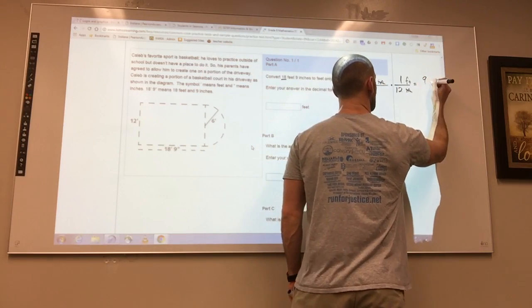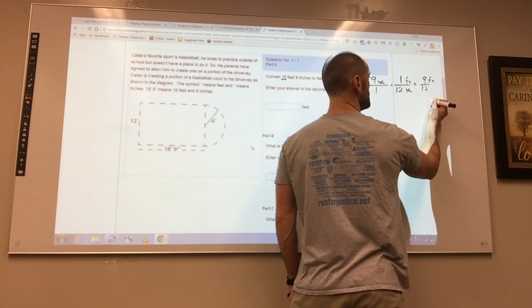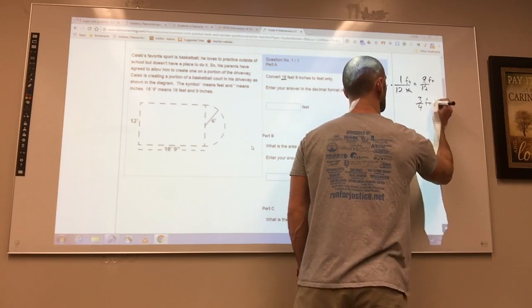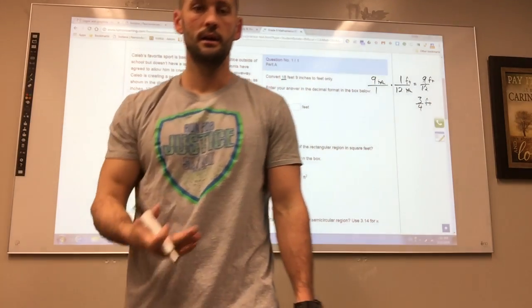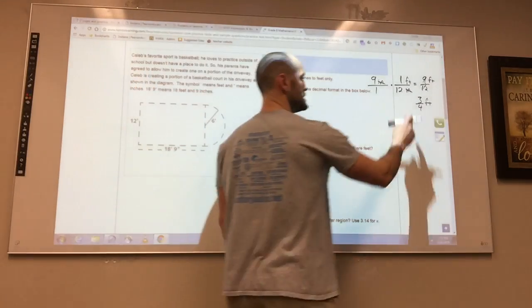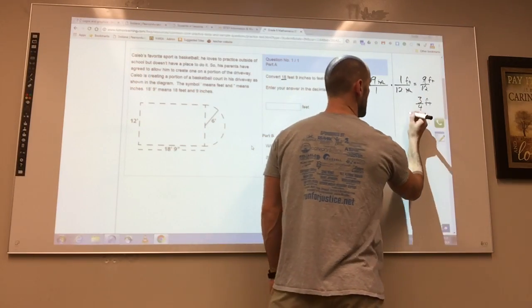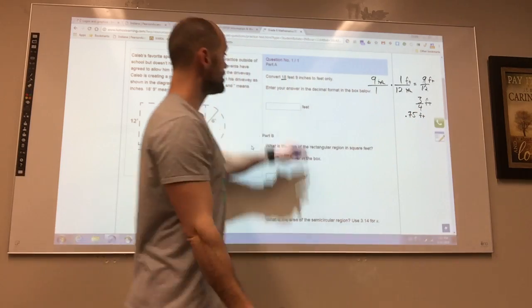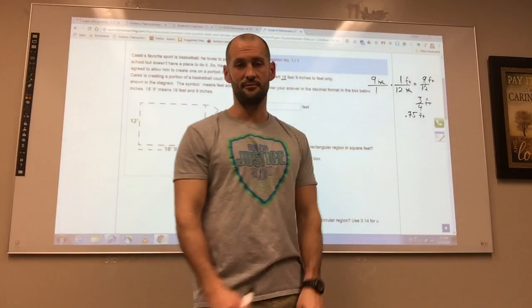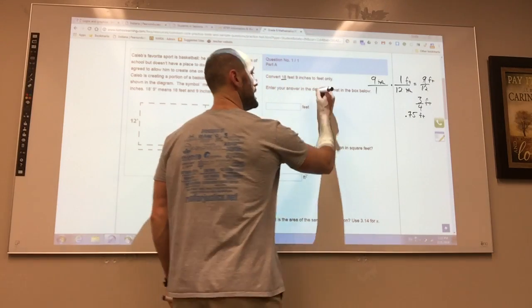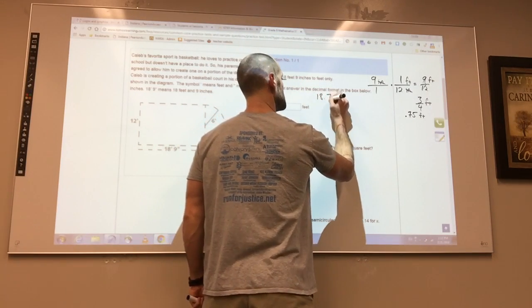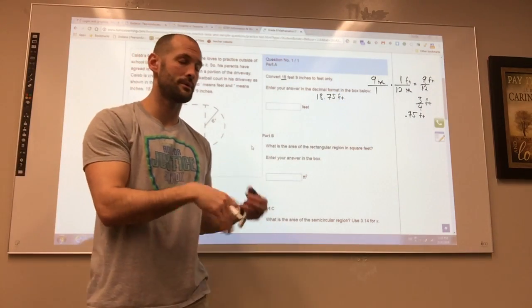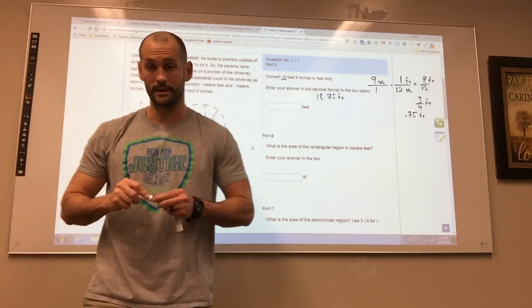From here our inches will cancel and we're left with just 9 feet over 12. We can easily reduce this and we get three-fourths of a foot. That's nice, but that's not what we can use - they said decimal. So you take 3 divided by 4 and you arrive at 0.75 feet. So you have 18 feet with 0.75 feet, that means your final answer should be 18.75 feet.